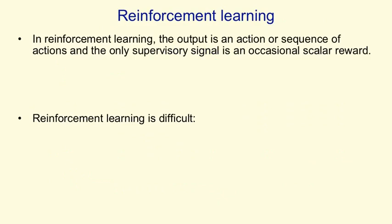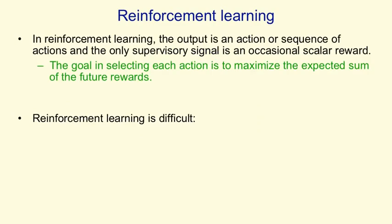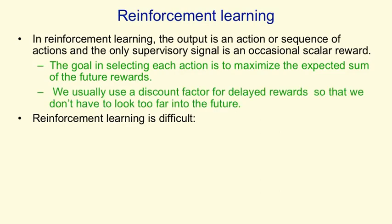In reinforcement learning, the output is an action or sequence of actions, and you have to decide on those actions based on occasional rewards. The goal in selecting each action is to maximise the expected sum of the future rewards, and we typically use a discount factor so that you don't have to look too far into the future — rewards far in the future don't count for as much as rewards that you get fairly quickly.